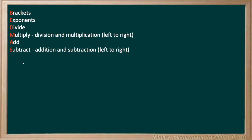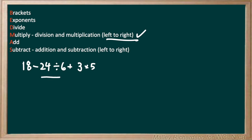Moving on to the next question, we have 18 minus 24 divided by 6 plus 3 times 5. This problem has no brackets, no exponents, but it does have division and multiplication, so we have to go from left to right. First we do 24 divided by 6, which gives us 4. So we have 18 minus 4 plus 3 times 5, which is 15.